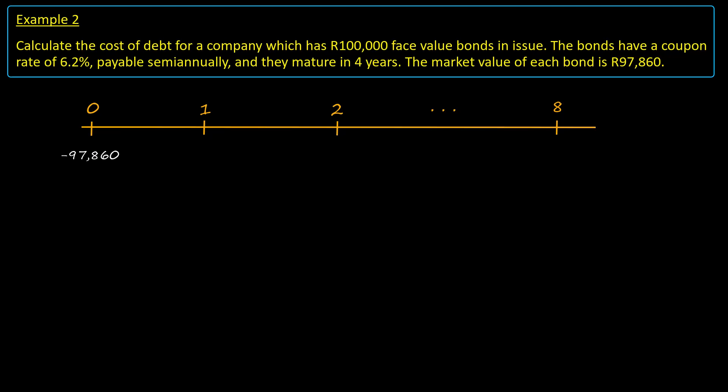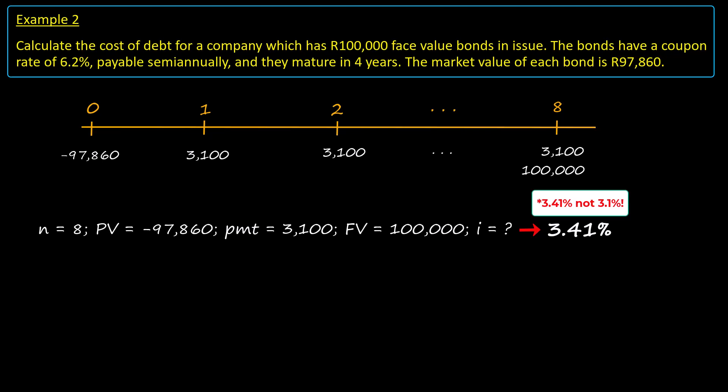Then the coupons, each one equal to 6.2% times 100,000 Rand divided by 2 and the maturity value of 100,000 Rand. We enter these inputs into the calculator's TVM functionality and solve for the discount rate, obtaining 3.1%.